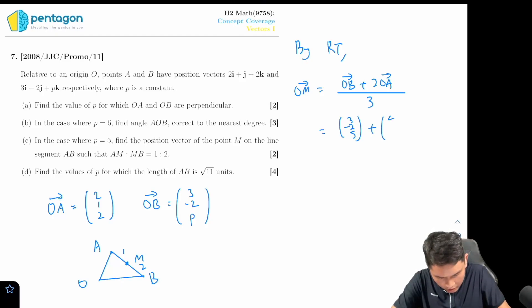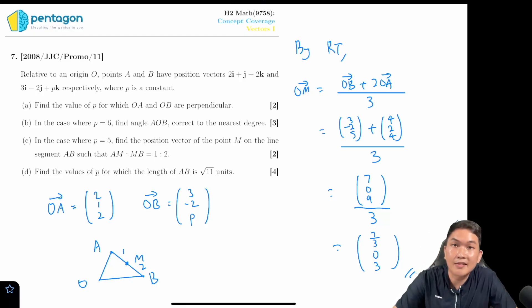Plus two times OA, that's just going to be four two four divided by three. Seven zero nine divided by three, so that's going to be seven over three zero three, and that's the answer for part c.